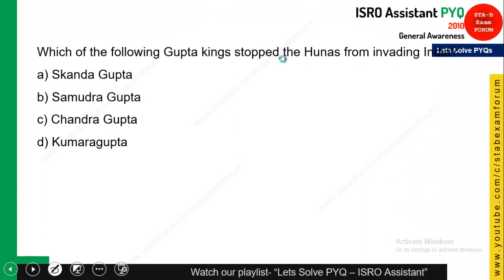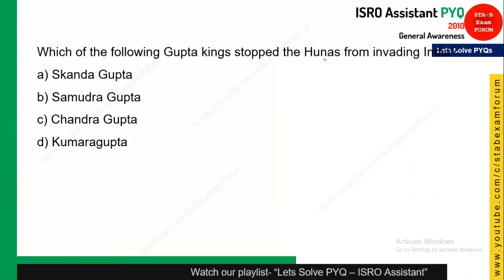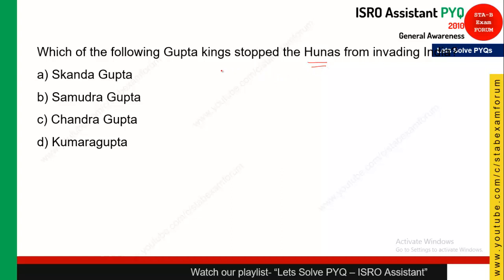This question is from history: which of the following Gupta kings stopped the Hunas from invading India? The Hunas attacked India at a certain point in history. The correct answer is Skanda Gupta — option A is the right answer. If you know this question, you are very good in history.